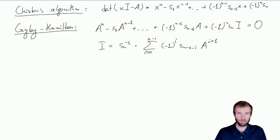And now we can multiply both sides of this equation by inverse of A, getting inverse of A on the left-hand side and different power of A on the right-hand side.